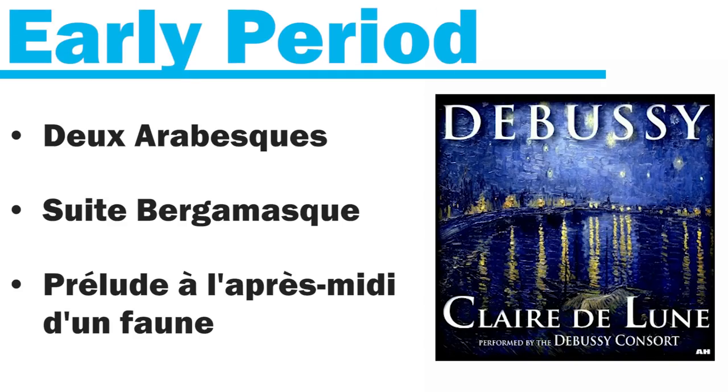He composed some notable piano works in this early period, including the Arabesques and the famous Suite Bergamasque in 1890 — the piano suite that Clair de Lune is from. This is also the era that his famous symphonic poem Prelude to the Afternoon of a Faun is from. His very famous Arabesques were composed when he was just starting to set himself apart from other composers, written when Debussy was about 30 years old between 1888 and 1891, and these pieces are some of the very first examples of impressionism in music.